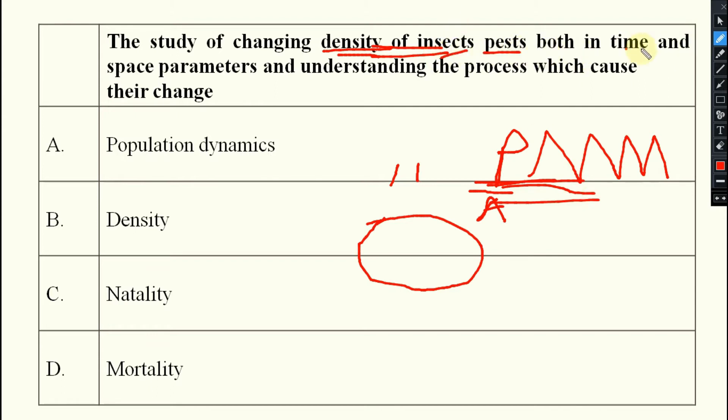Pest, both in time and space. Not only area but also in a particular time and space parameter, and understanding the process which caused the change. Why? If the population is increasing, why? If the population is decreasing, why? Getting my point?